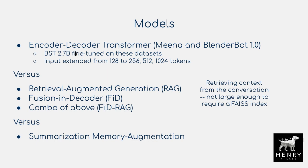We start with the standard encoder-decoder, the baseline BlenderBot 1.0, where you just encode the context. The context is limited to the last 128 tokens in the chat, or you could extend it to 256, 512, and 1024 tokens, fine-tuning the model with this extended input window.